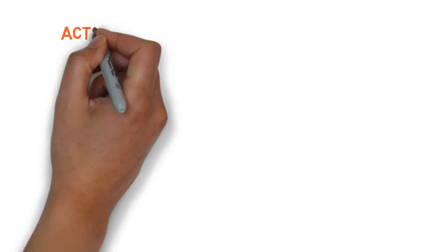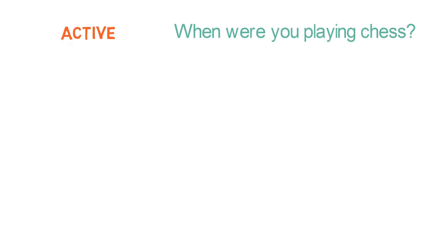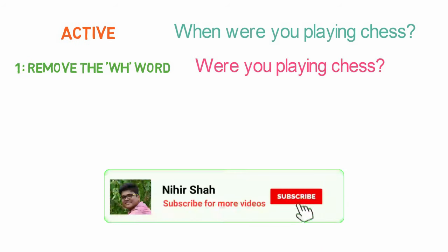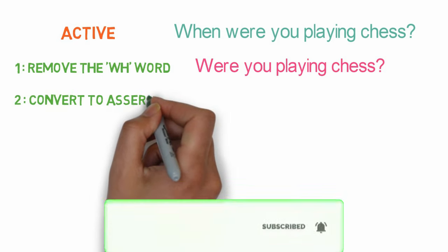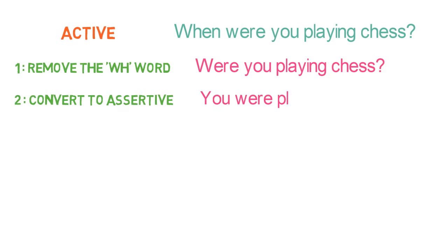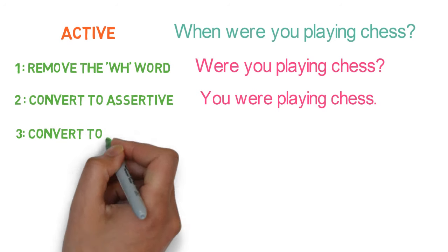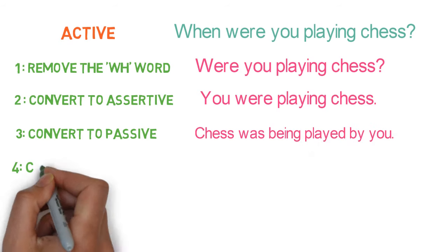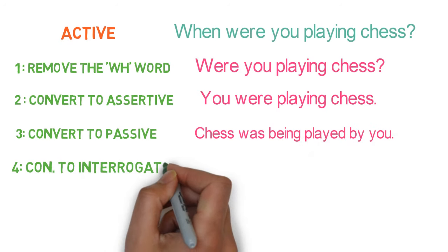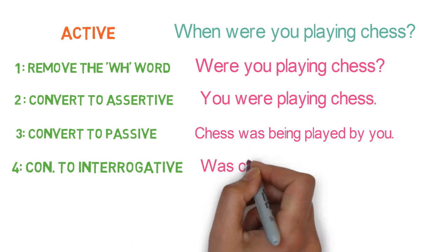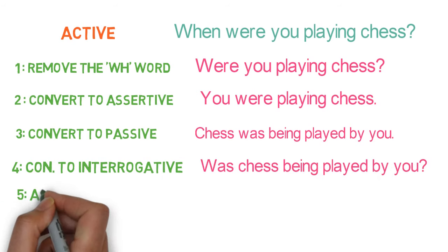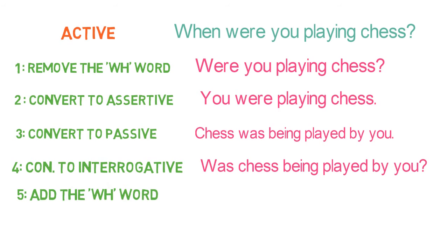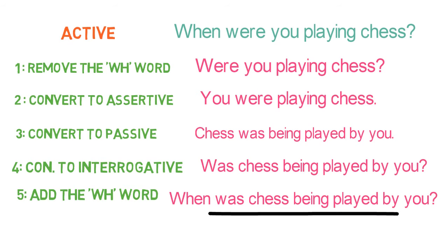Let's look into the next example: 'When were you playing chess?' Step 1: Remove the WH word — 'Were you playing chess?' Step 2: Convert interrogative to assertive — 'You were playing chess.' Step 3: Convert to passive form — 'Chess was being played by you.' Step 4: Convert assertive to interrogative — 'Was chess being played by you?' Step 5: Add the WH word again — 'When was chess being played by you?' Finally, we got the passive form.